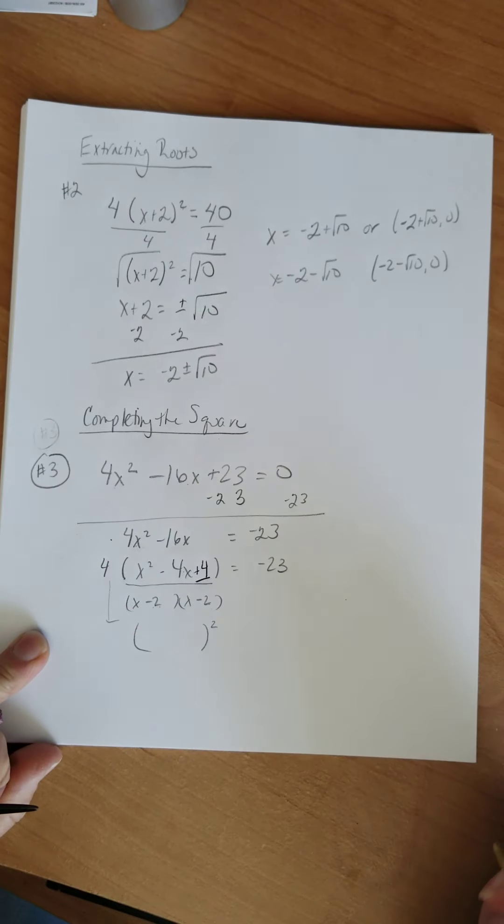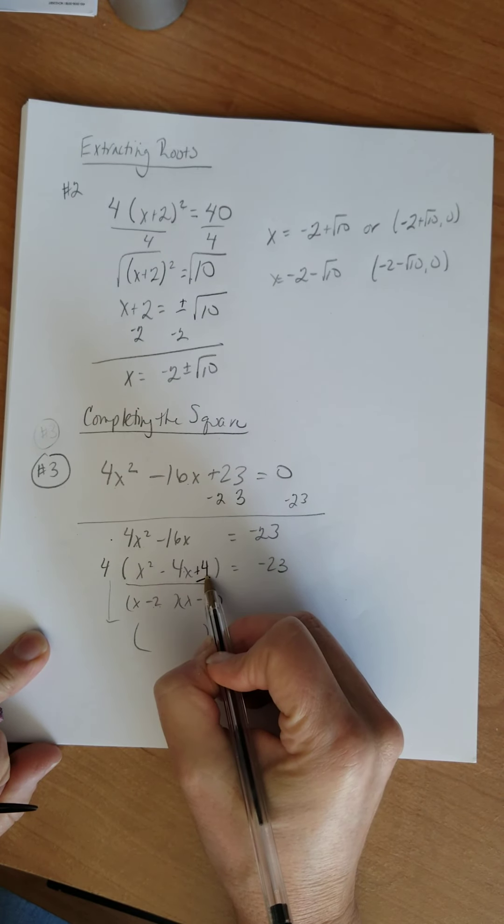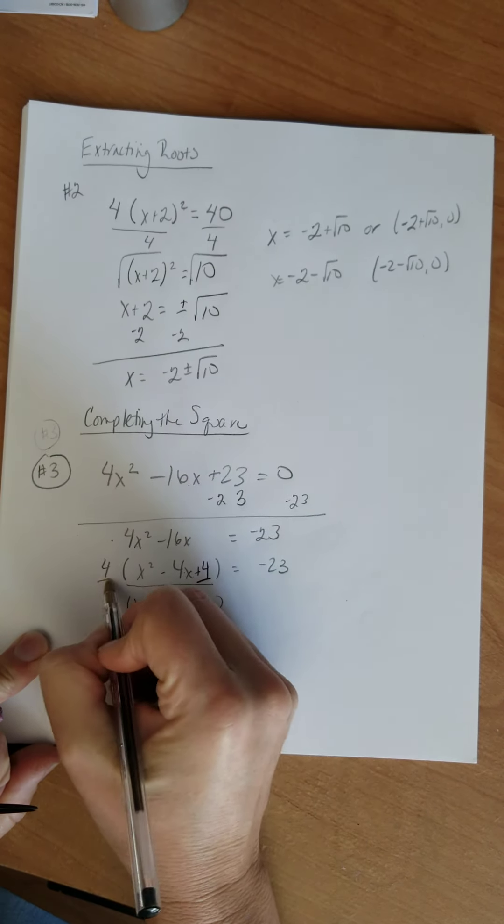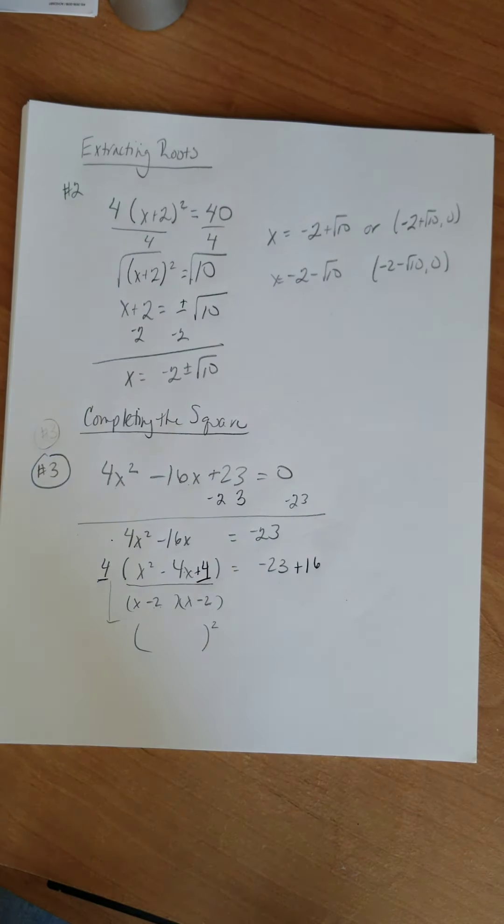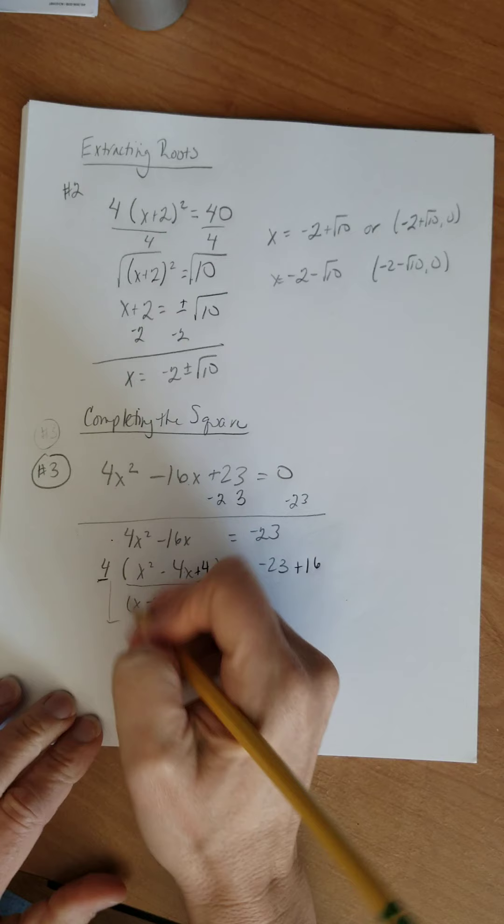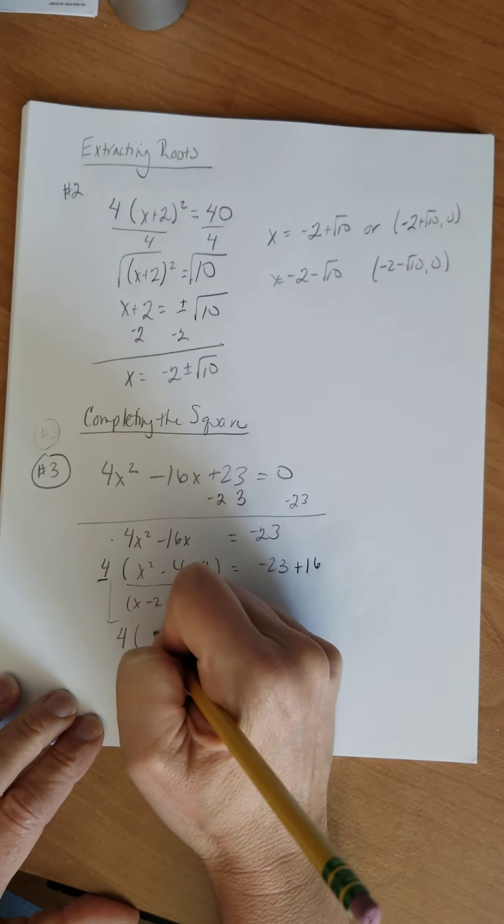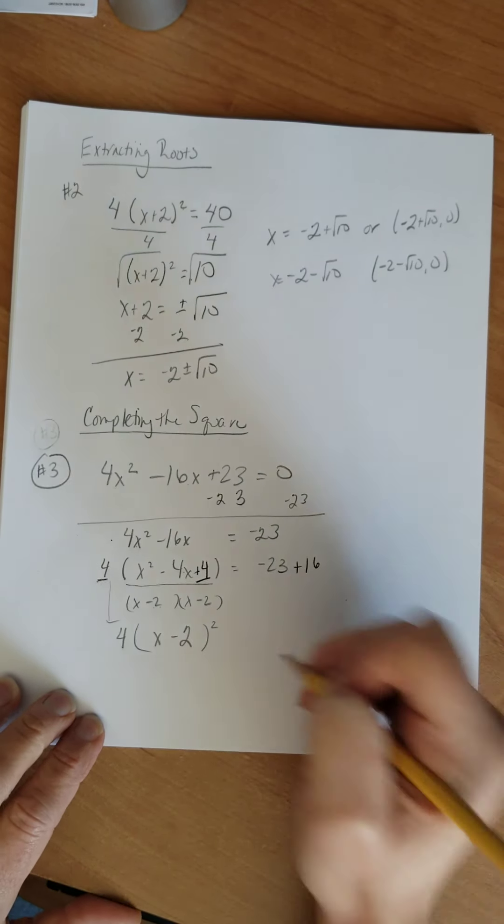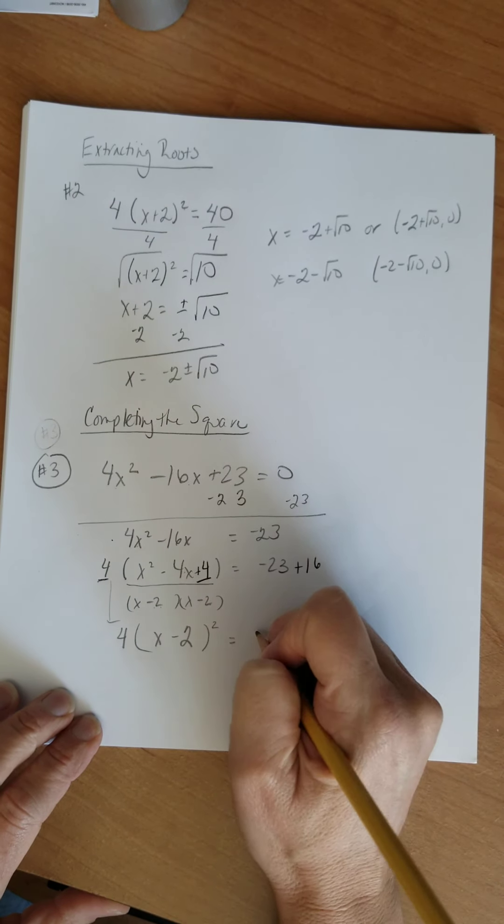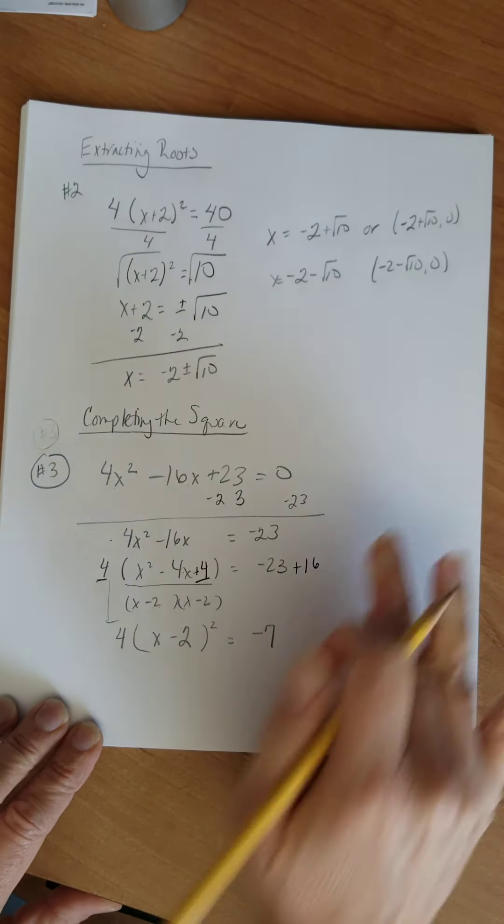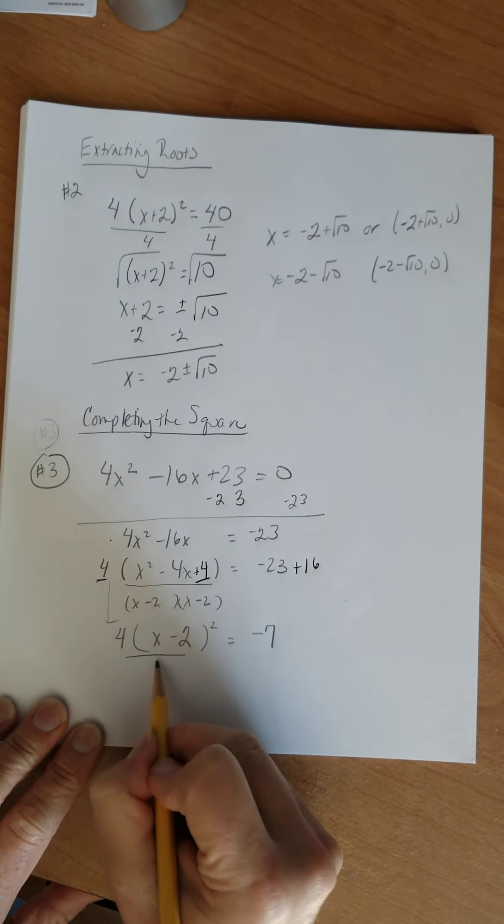All right, so if they're both going to be negative 2, I'm looking for a pen. Here we go. If they're both negative 2, is it negative 2 times negative 2 positive 4? So we're going to add a positive 4 here. Now, I added 4 here. I didn't add 4. I actually added 16. All right, so here we go. I'm going to have a 4 on the outside here and then x minus 2 squared equals negative 23 plus 16. I'm sorry, that's a negative 7. I may have to take this to the right. We'll see how this goes. Let's divide by 4.